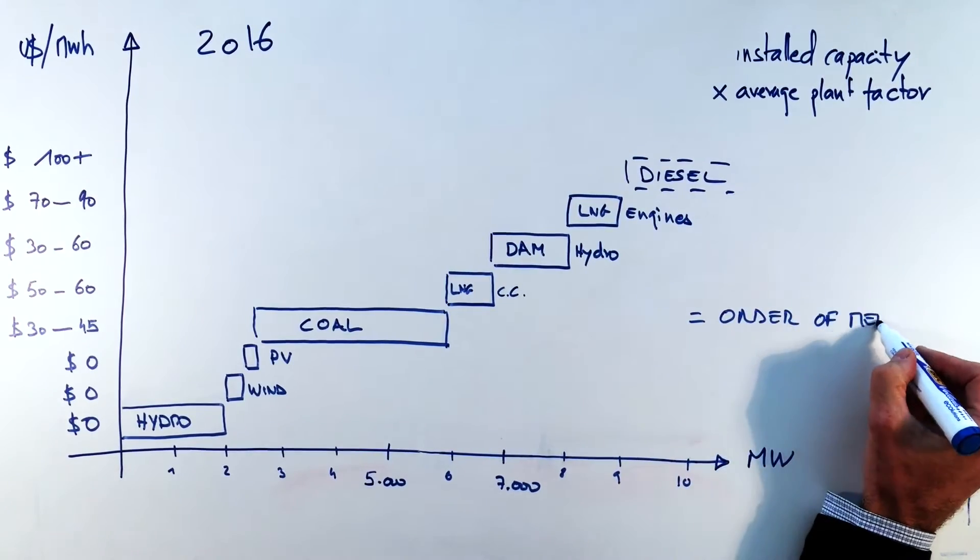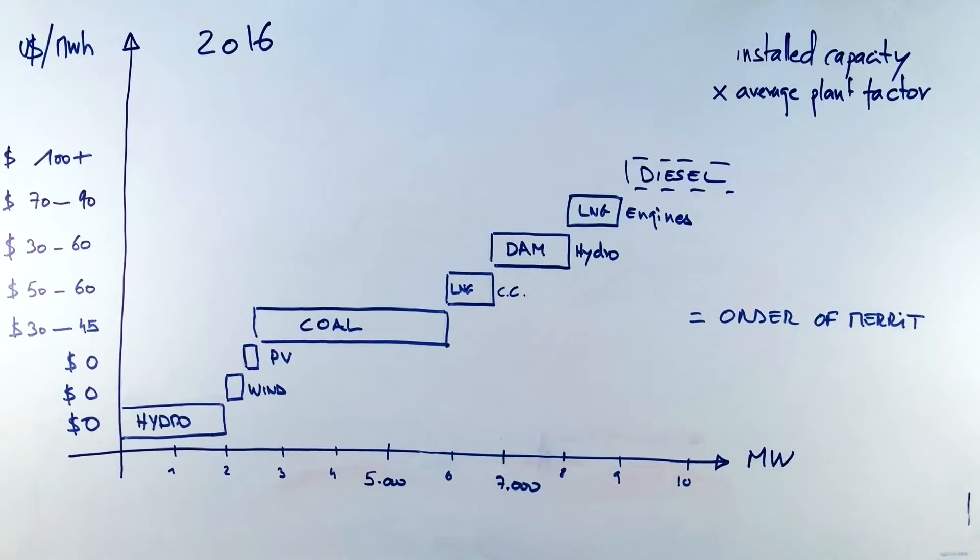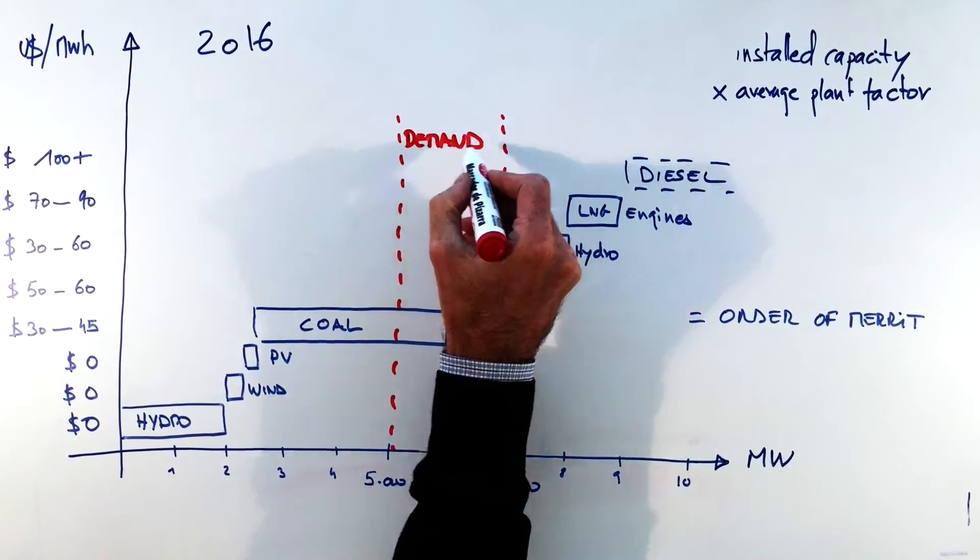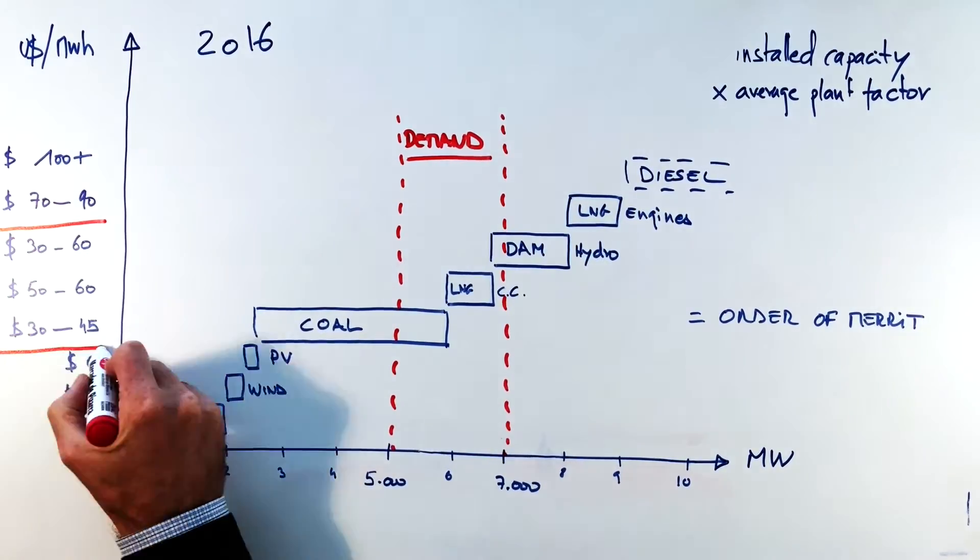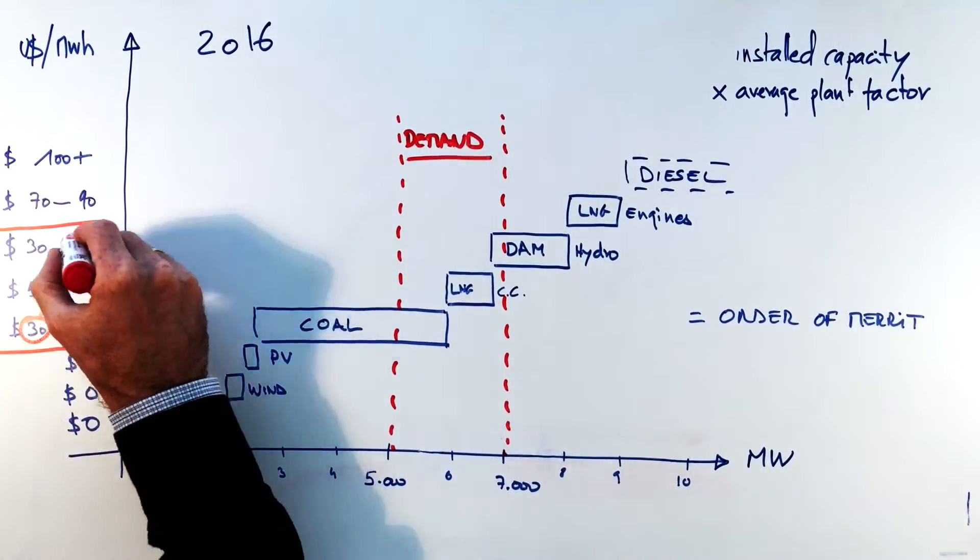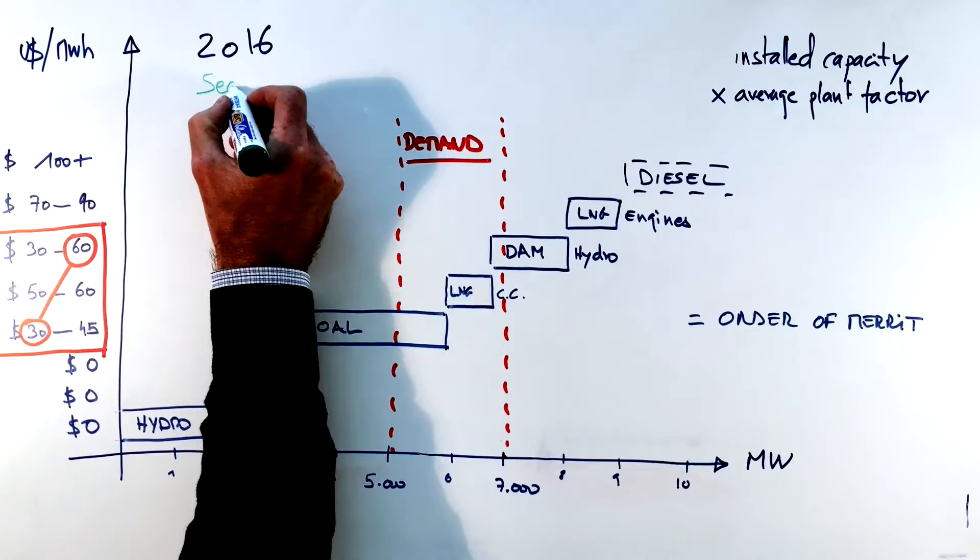So this is what we call the order of merit and this is the order in which the technologies are dispatched in the system. So our demand is between 5,000 and 7,000 and we can see that this demand is currently satisfied either by coal, LNG or dam with a price ranging from 30 to 60 dollars per megawatt hour.